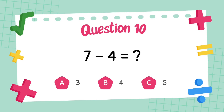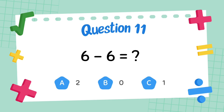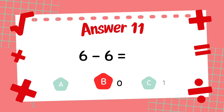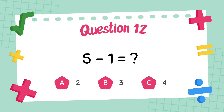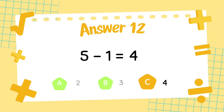What is seven minus four? The answer is three. What is six minus six? The answer is zero. What is five minus one? The answer is four.